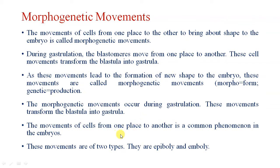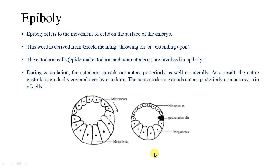The movements of cells from one place to another is a common phenomenon in embryos. The movements are of two types: epiboli and emboli. As the name refers, epiboli refers to the movement of cells on the surface of the embryo. Epi refers to upper side only. The word is derived from Greek meaning 'throwing on' or 'standing upon.'